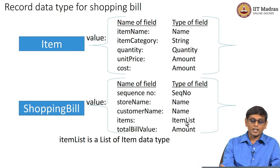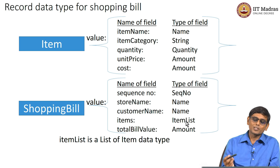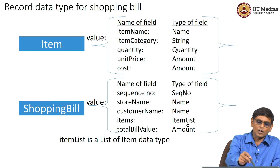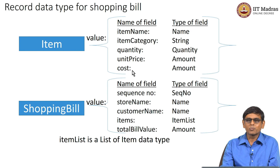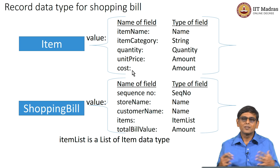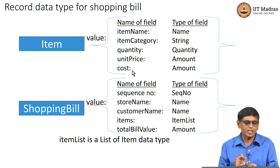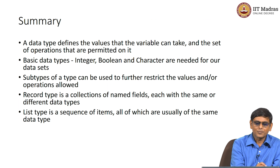Note that the record data type for shopping bill contains a number of fields, and one of those fields is a list. That list is a list of records. So it is a record that has a field which is a list of another record — which is item — which in turn has a number of fields. As we go along we will see such hierarchies of data types, putting together basic data types to create more complex data types, and then using those complex data types to solve our problems.